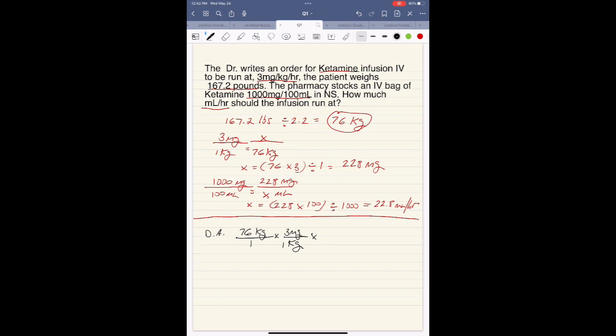We look at the stock solution. Again, we want the units to cancel out. The 1,000 has to go on the bottom: 100 milliliters over 1,000 milligrams.